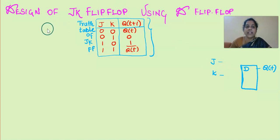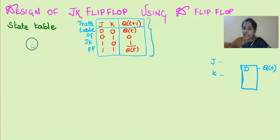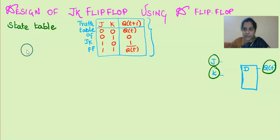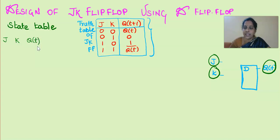As this is our requirement, we need to first obtain the state table. To obtain the state table, we first want to identify what are the external inputs and how many states there are. In our circuit we are having two external inputs J and K, and one flip-flop with one state Q. Based on these values, we need to design the state table. The input variables are J, K, and the state Q(T).